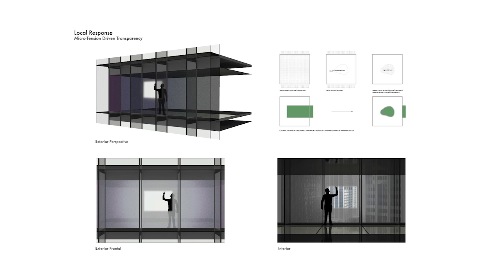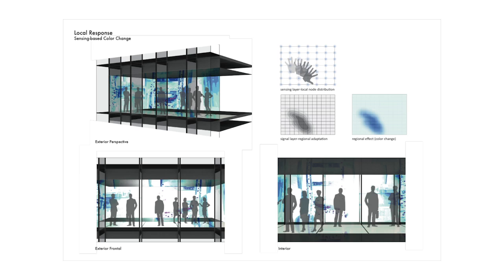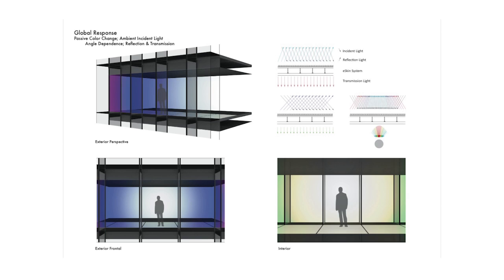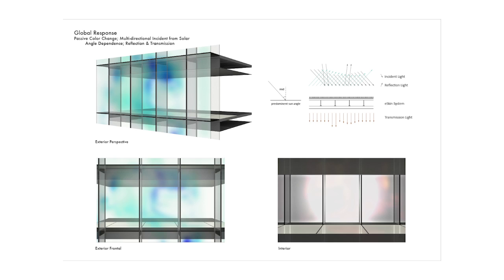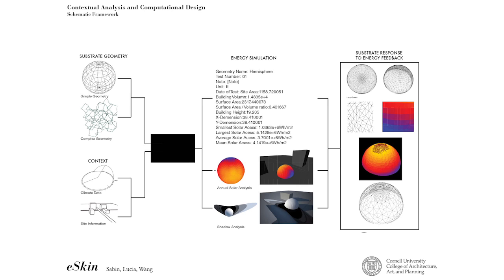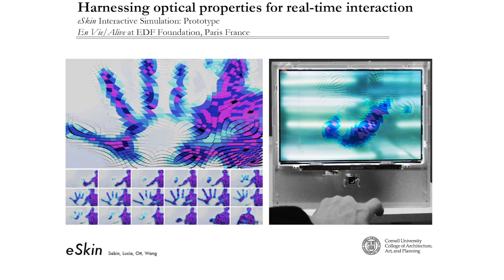These are some of the most recent speculations, looking at the opportunity for the production of a tunable window. When one stretches a piece of this eSKIN material, one can begin to inflect change in the areas of transparency as well as structural color. We're also interested in haptic response — how one can begin to tune their own environment — looking at the topic of personalized architecture, with local responses based on interior sensors and global responses looking at ambient and multi-directional incident light from solar angle dependence.